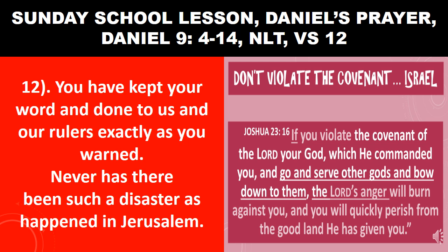In verse 12 of our text, Daniel is praying to God on behalf of the people: 'Lord, you have kept your word and done to us exactly as you warned. Never has there been such a disaster as happened in Jerusalem.' Sometimes we wonder why we are in the problems we have in our life — it's because God has warned us. People have been sent to warn us along the way. And under Joshua, God said: if you violate this covenant and serve other gods, the Lord's anger will burn against you and you will quickly perish from this good land, the land of milk and honey. God kept his word and done exactly as he warned.